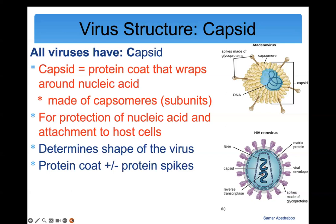All viruses also have a protein coat called the capsid. The purpose of the capsid is to protect the DNA or RNA of the virus, and also to help the virus attach to host cells. The capsid also determines the shape of the virus, and it may or may not contain spikes.